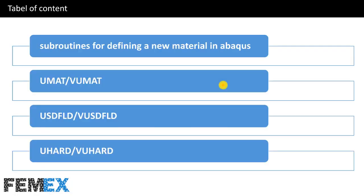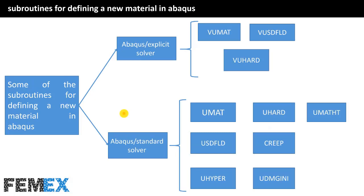This is the table of content of this video. First, I want to introduce some of the subroutines for defining a new material in Abaqus. Then I will talk about UMAT and VUMAT, followed by USDFLD and VUSDFLD, and finally UHARD and VUHARD subroutines. Each of the solvers in Abaqus has its own subroutines for defining a new material.